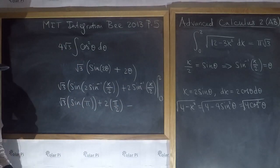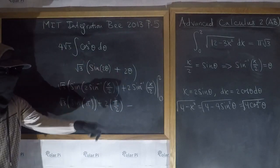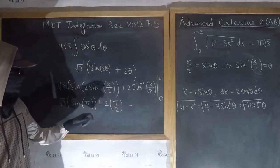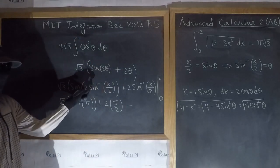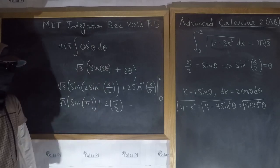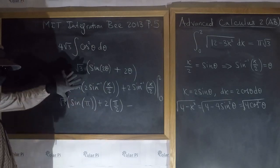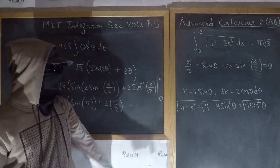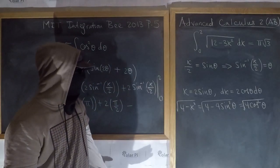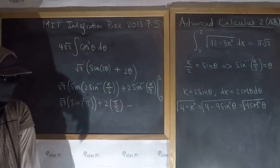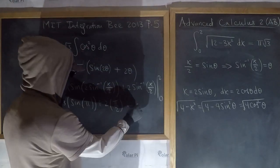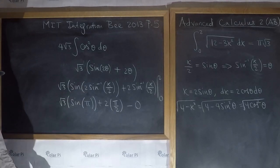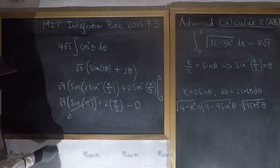Plugging in zero: sine inverse of zero over two is sine inverse of zero, which is zero, so both terms give zero. We're subtracting nothing. Also, sine of pi is zero. So the whole expression evaluated at zero is zero.